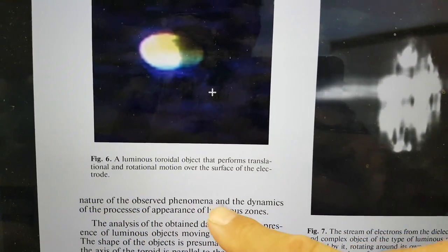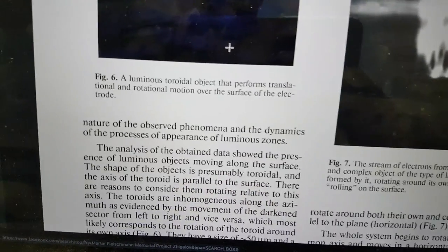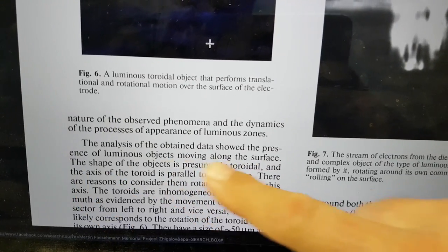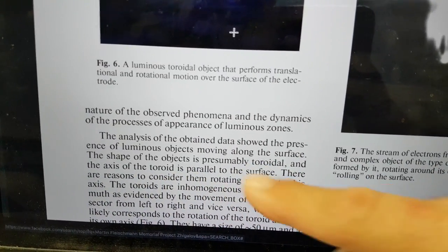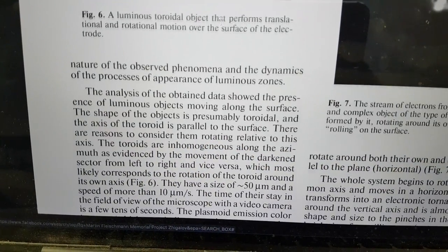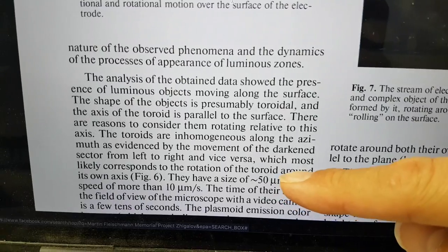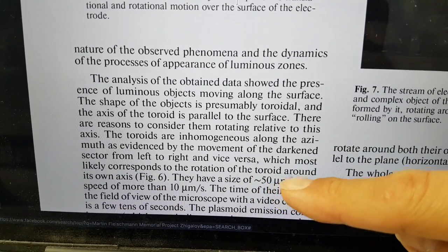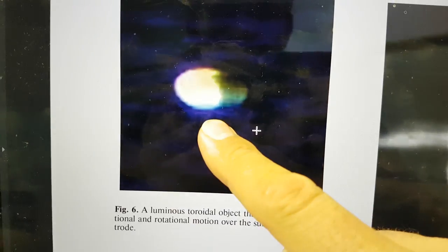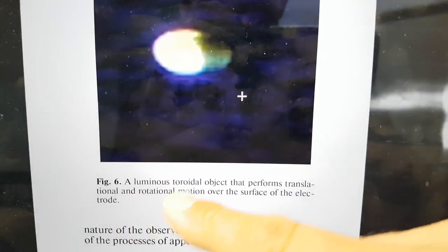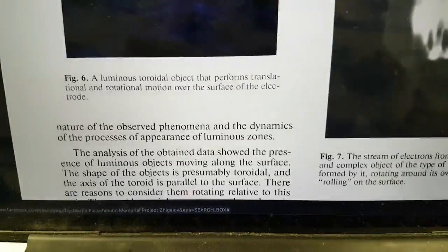Constant observation of the surfaces both exposed to this process and located in the zone directly adjacent to the discharge, as well as the ones in direct contact with such surfaces, was completed, which could confirm the assumption about the existence of stable particles responsible for long-term glow plasma formation at the micro and macro levels. The analysis of the obtained data showed the presence of luminous objects moving along the surface. The shape of the objects is presumably toroidal, and the axis of the toroid is parallel to the surface.